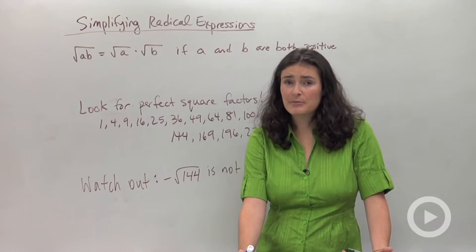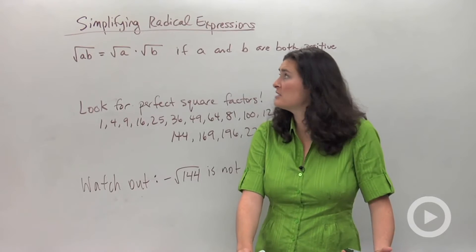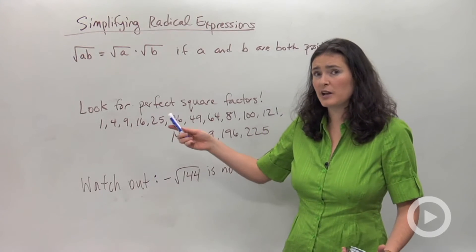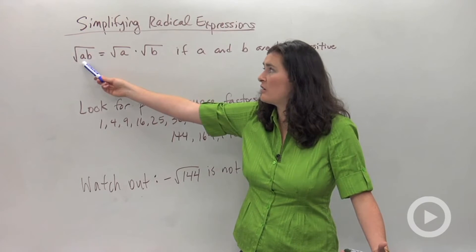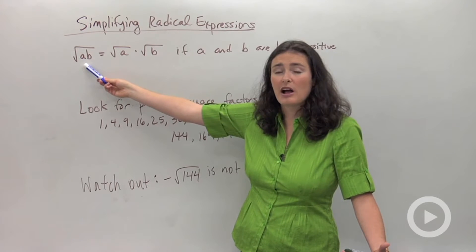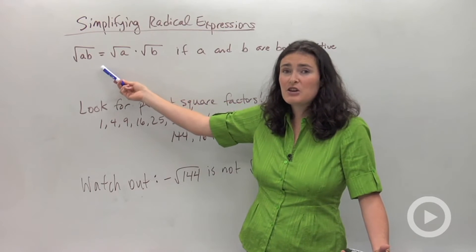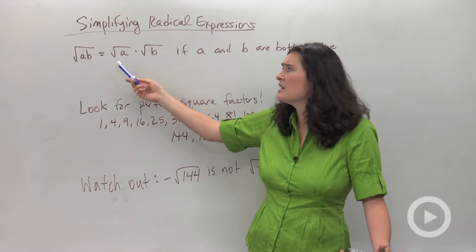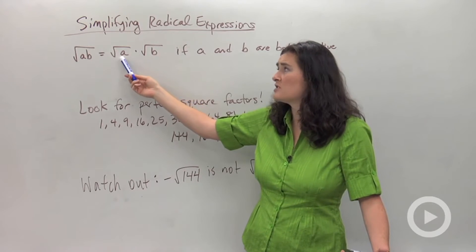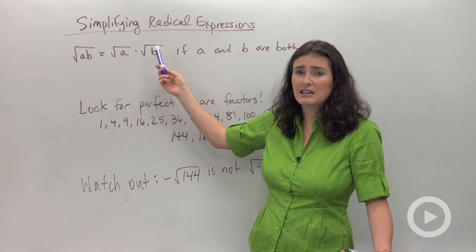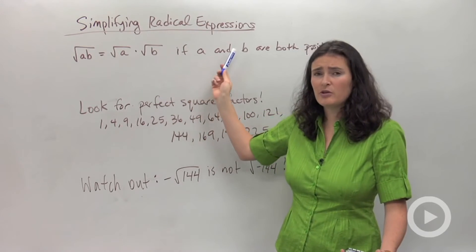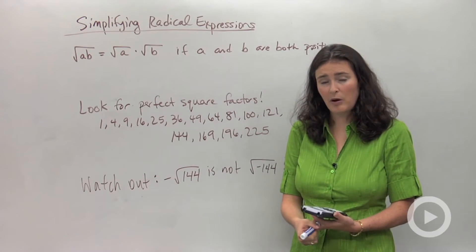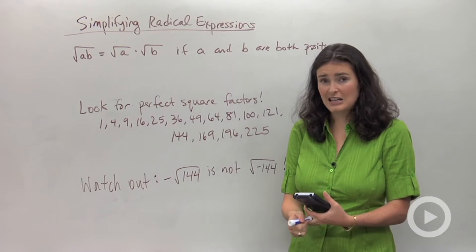When you're asked to simplify radical expressions, we have a really important property. If you have the square root of the product a·b, that's equal to the product of their individual square roots — the square root of a times the square root of b. Just be really careful: this is only true as long as a and b are both positive and not zero.